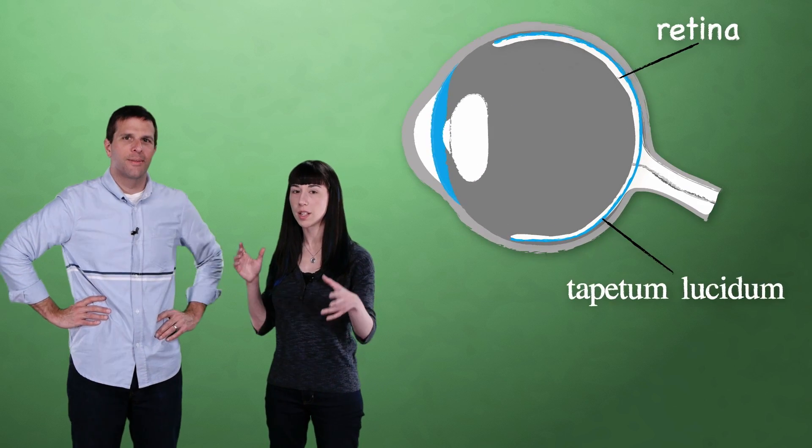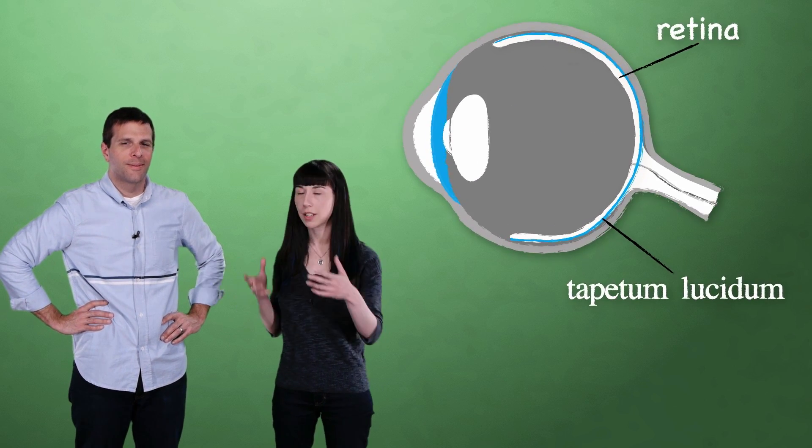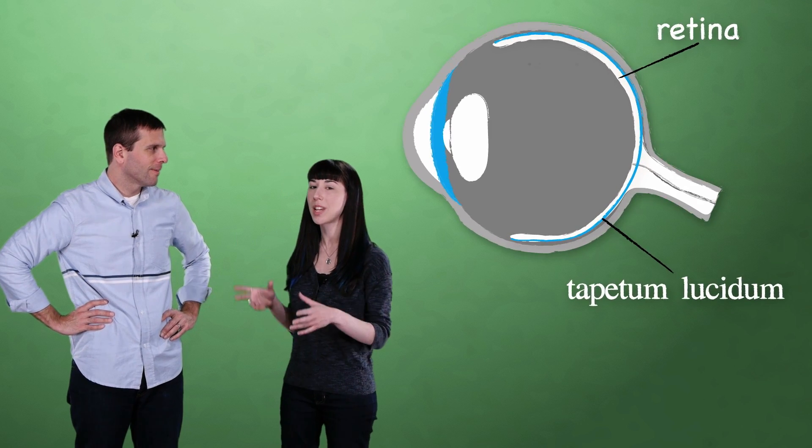So the tapetum lucidum is usually located behind the retina and it's made up of mirrored crystals that reflect the light. Lots of different animals have these, so there's a broad diversity of how they're structured. Depending on the type of animal, there might be several layers of both high and low refractive index materials in the tapetum. These are compatible with different wavelengths of light, which just means that depending on the structure of the layers and the particular colors of light that are coming into the eye, they'll either enhance or interfere with night vision.